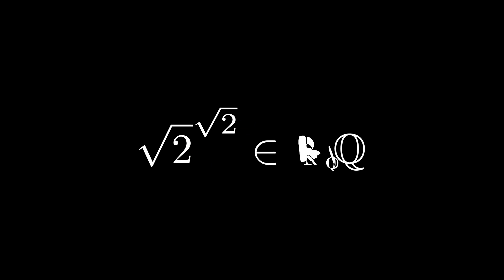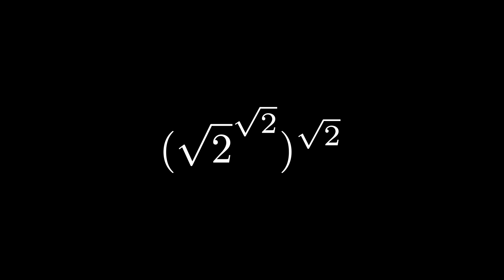Else, root 2 to the root 2 is irrational, which means root 2 to the root 2 to the root 2 is also the power of two irrationals, where x is root 2 to the root 2 and y is root 2.